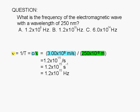Note that a nanometer is 10 to the negative 9 meters. So 250 nm is 250 times 10 to the negative 9 meters.